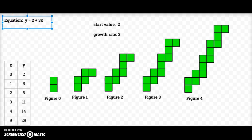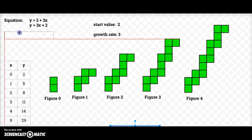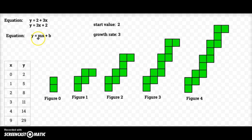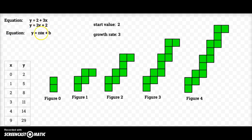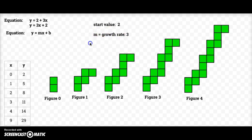Now I'd like to relate growth rate and start value to a general equation. I can also write this equation as y equals 3x plus 2. I need it in this format because I am learning what the general equation of a line is — and that general equation is y equals mx plus b. Lining these up, my m is the number in front of x, which is my growth rate. So m is equal to my growth rate, whereas my start value is in the same place as the b, so b is my start value.